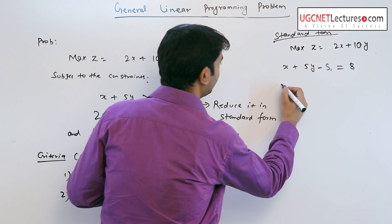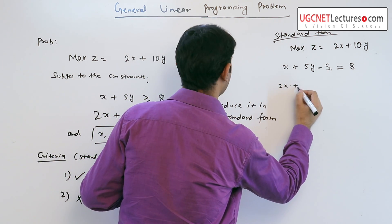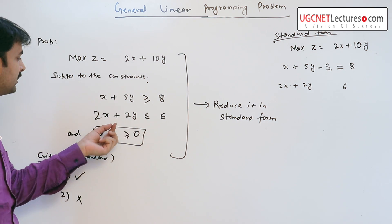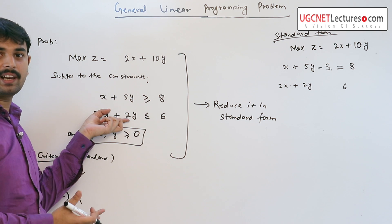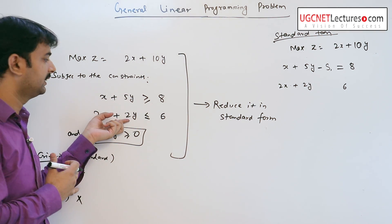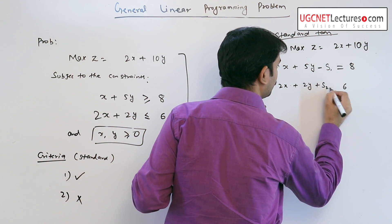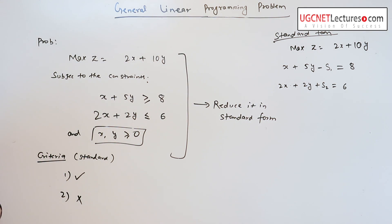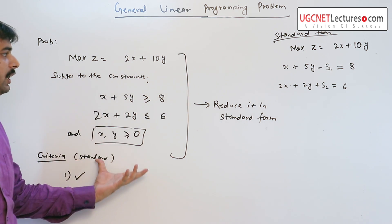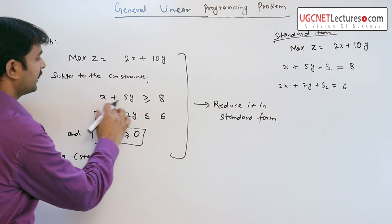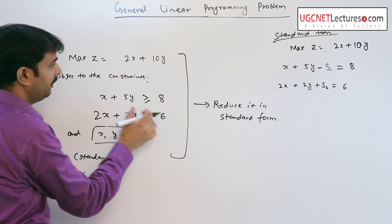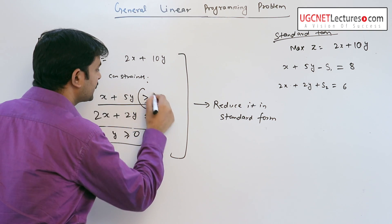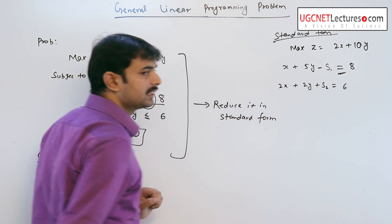For the second constraint, x plus 2y is less than or equal to 6. If we add some real number S2 on the left hand side, this inequality changes to an equality sign. So for the first constraint, x plus 5y is greater than or equal to 8, we subtract a real number S1, and this inequality sign changes to an equality sign.